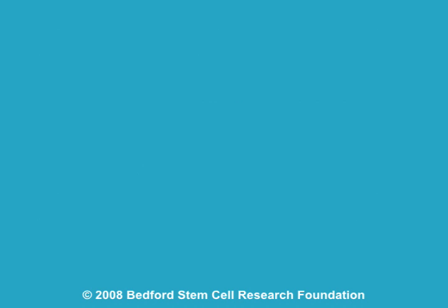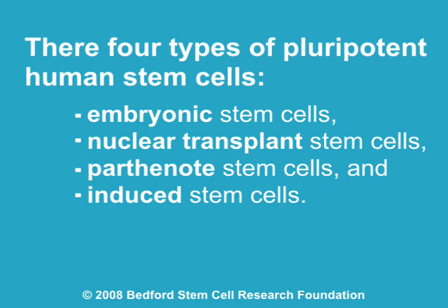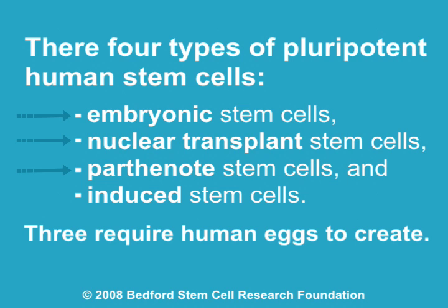There are four types of pluripotent human stem cells, three of which require eggs to create. The most commonly understood is embryonic, which means it comes from an egg which was fertilized by a sperm.